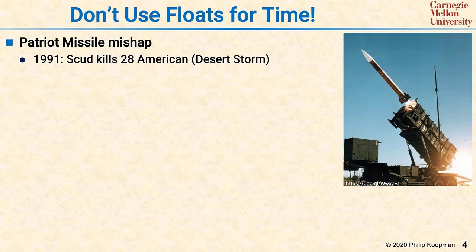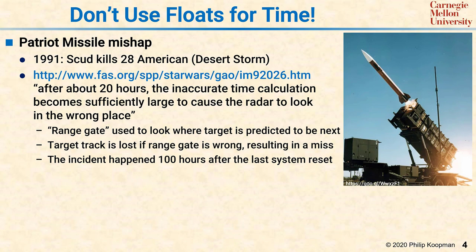One of the biggest mistakes to use in floating-point is using a 32-bit floating-point value to represent time. Here's the story. Back in 1991, during Operation Desert Storm, there were Scud missiles being launched, and the Patriot missile system was deployed to intercept and shoot down those incoming ballistic Scud missiles. According to the investigation report, what happened was after about 20 hours of continuous running, the time calculation became so inaccurate due to round-off error that the radar looked in the wrong place for the incoming missile.